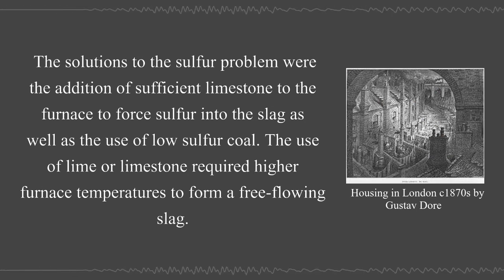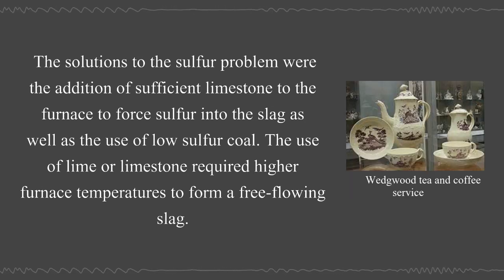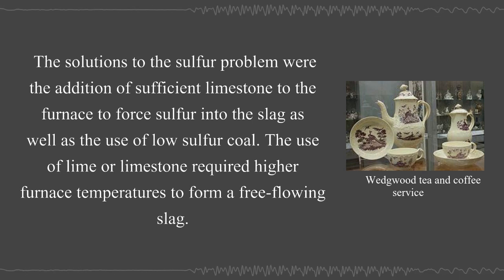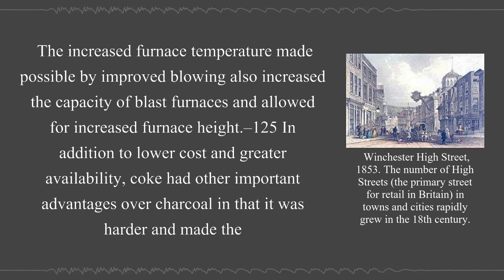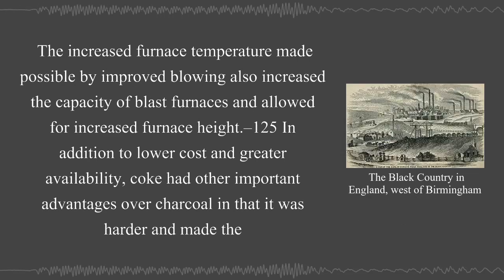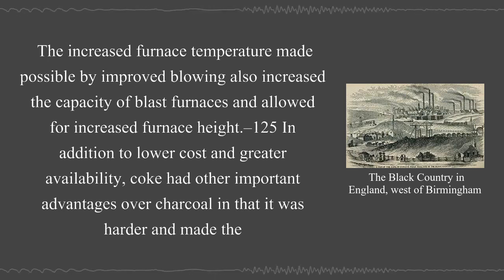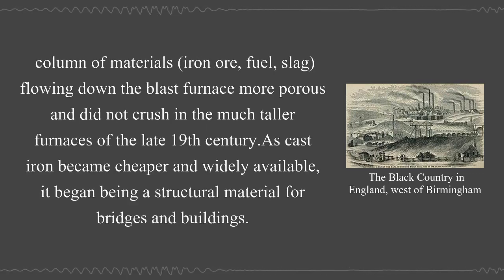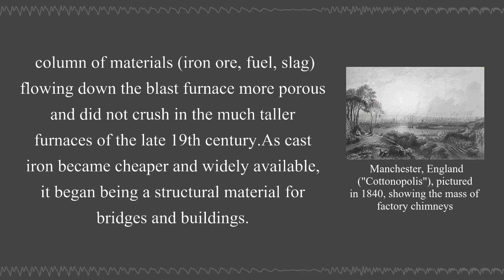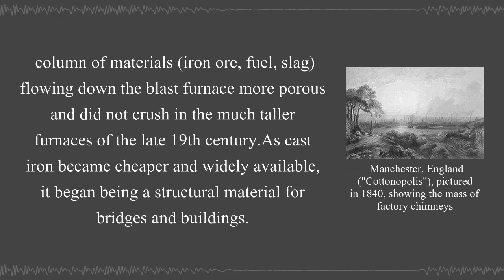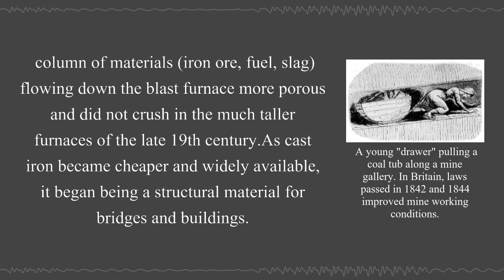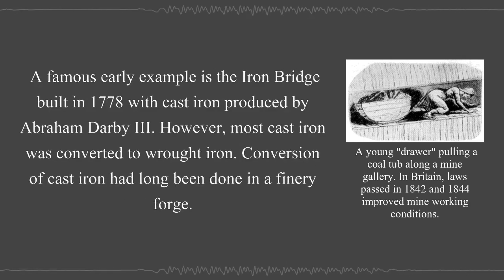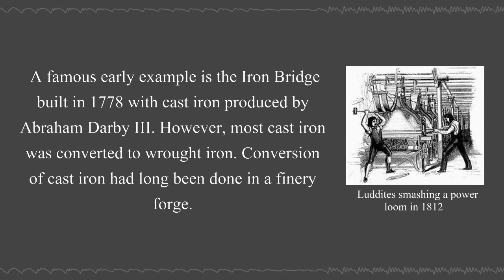The solutions to the sulfur problem were the addition of sufficient limestone to the furnace to force sulfur into the slag, as well as the use of low sulfur coal. The use of lime or limestone required higher furnace temperatures to form a free-flowing slag. The increased furnace temperature made possible by improved blowing also increased the capacity of blast furnaces and allowed for increased furnace height. Coke had other important advantages over charcoal in that it was harder and made the column of materials flowing down the blast furnace more porous. As cast iron became cheaper and widely available, it began being used as a structural material for bridges and buildings; a famous early example is the iron bridge built in 1778 with cast iron produced by Abraham Darby III.